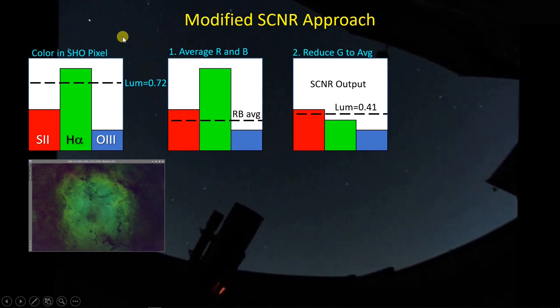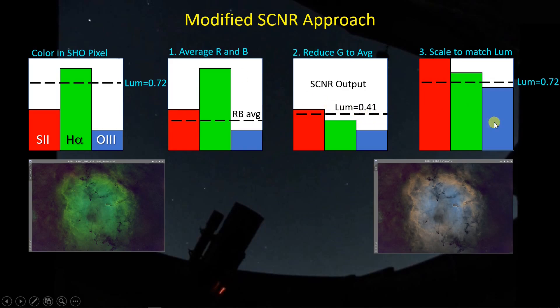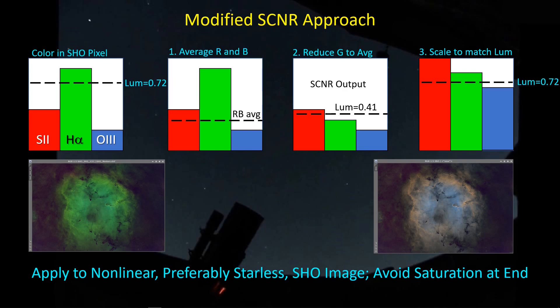So what I'm trying to do with this modified SCNR approach is take another step where I amplify these colors so that the pixel has the same luminosity as it did before. We end up with the risk of saturating the red or the blue. The best fix for this is don't start with an image that has been overly stretched. As an alternative, I have in my modified script a factor that I can apply so that it doesn't scale it all the way back up to the original luminosity. Maybe I only go to 90% for example, but the best approach is to simply not overstretch the initial image. This modified SCNR approach is best applied to non-linear, preferably starless SHO images, and we want to avoid saturating the image at the end.